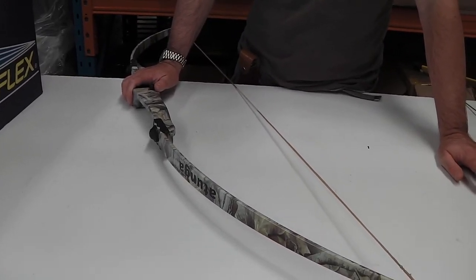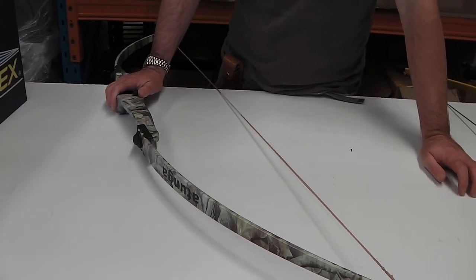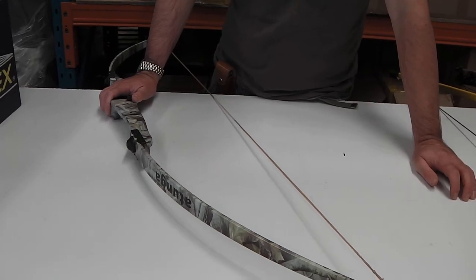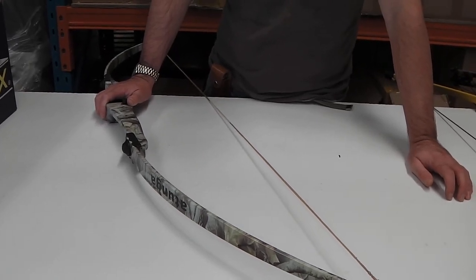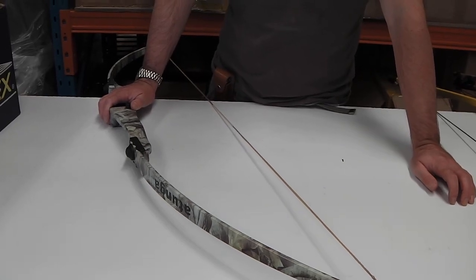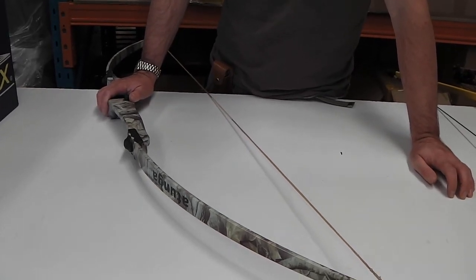The 26-pound is ideal for ages 6 or 7 up to around 10. The 34-pound bow is ideal for ages 10 to 14. The 48-pound bow is ideal for age 14 and upwards to fully grown adults.